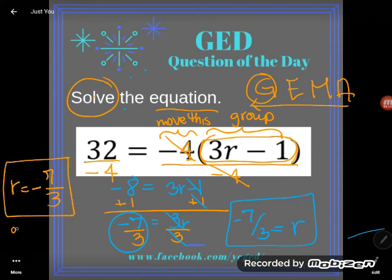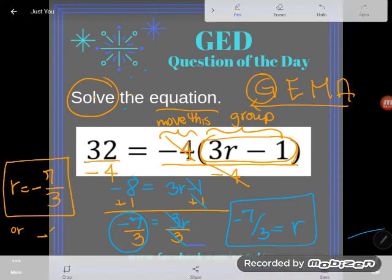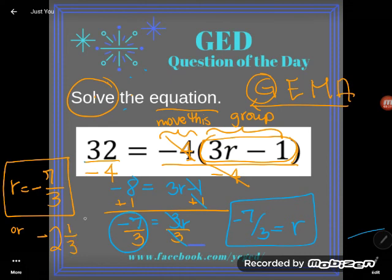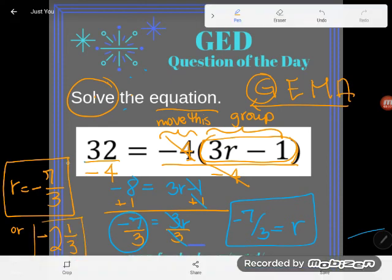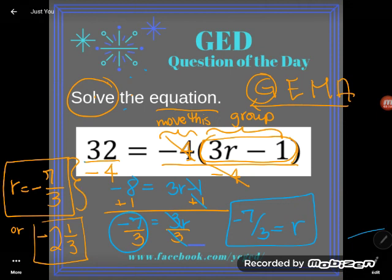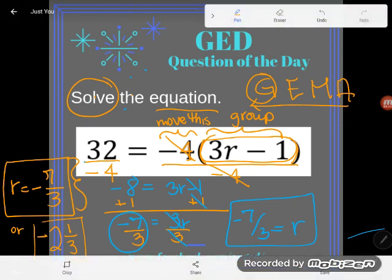Now, you could certainly convert that if you really wanted to and tell me something like, oh, it's negative 2 and 1 third if you want it as a mixed number. But I have to tell you the truth. This is the more common answer because mathematicians are so lazy. We'd probably just leave it there. Negative 7 over 3 is a legit answer here. And I am done.